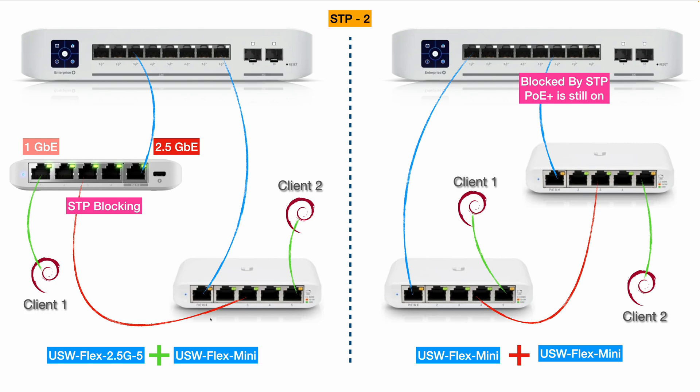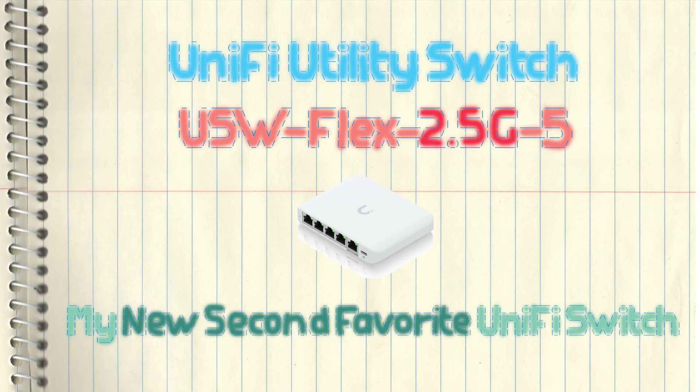For this particular test you may not see a difference in ping, but think about it: if the upstream switch also didn't support STP, you'd have a network loop with no way to stop it automatically — a network disaster. This is why the new Flex 2.5G supporting STP matters. That concludes the video; thanks for watching.